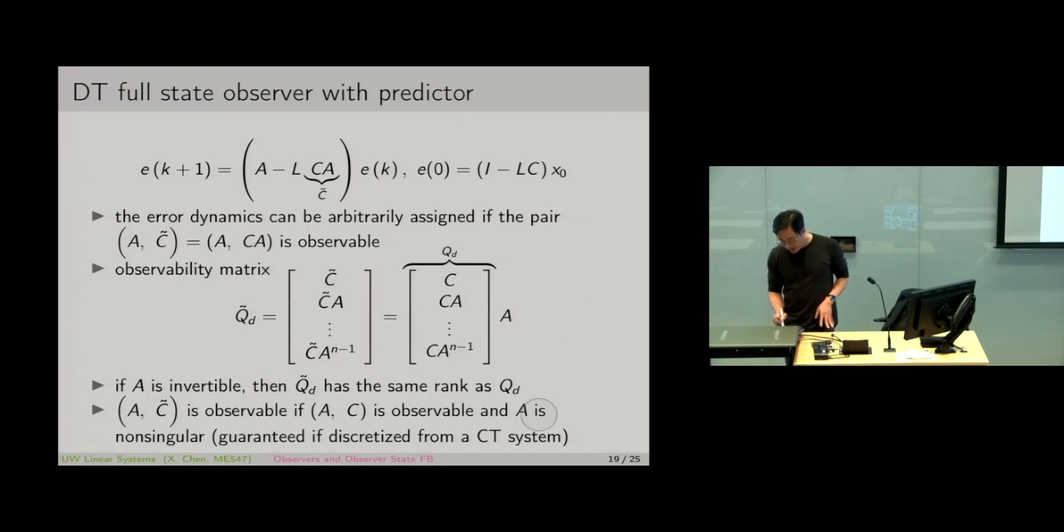This condition that A has to be invertible is not guaranteed for a continuous time system, right? If you think about x dot equals Ax plus Bu, the A matrix in the continuous time system is not guaranteed to be non-singular. However,